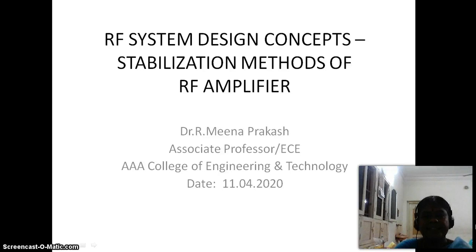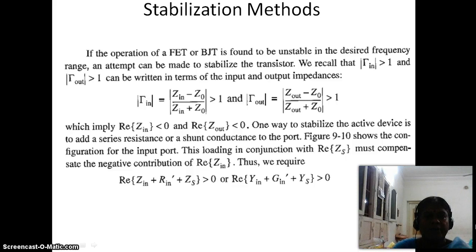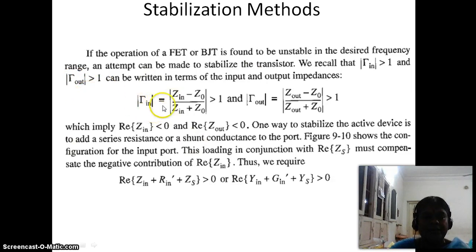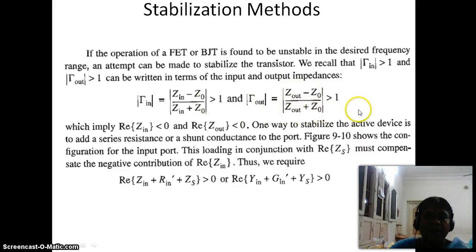Good morning. In this class we will discuss about the stabilization methods of RF amplifier. The conditions for stability are that the magnitude of the reflection coefficients should be less than 1, that means magnitude of gamma_in should be less than 1 and gamma_out should also be less than 1. The input reflection coefficient can be written as (Zn minus Z0) by (Zn plus Z0), and the output reflection coefficient as (Zout minus Z0) by (Zout plus Z0). These two should be less than 1 for stability.